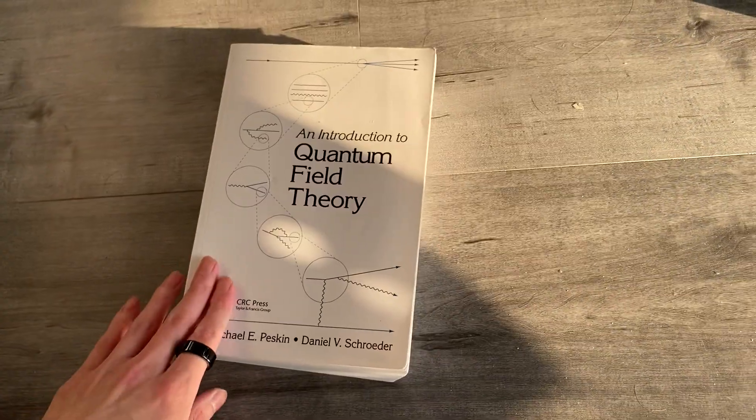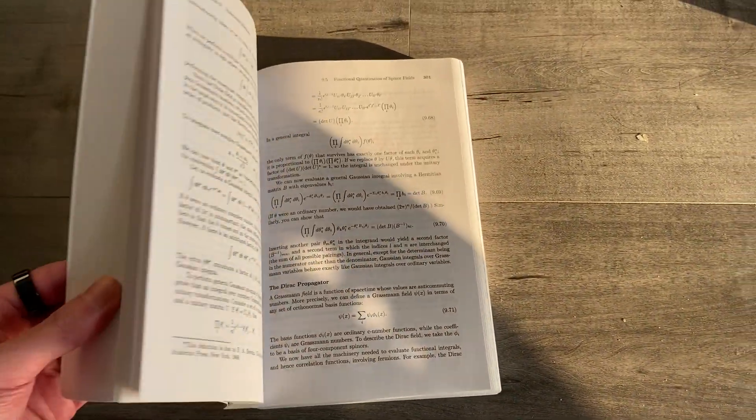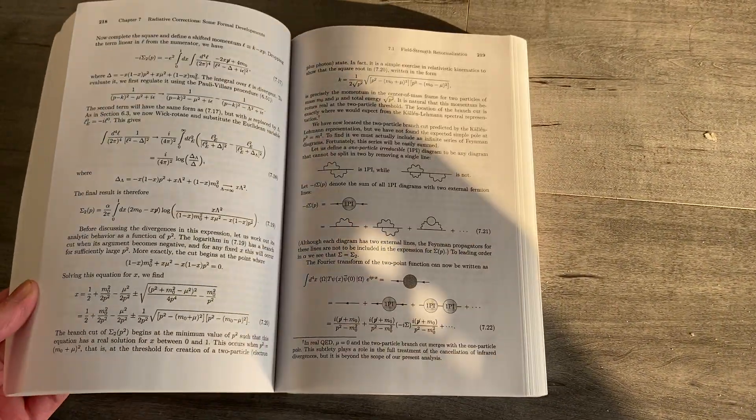For quantum field theory, I recommend Peskin and Schroeder. It's very mathematically dense. It's a go-to text for PhDs and researchers, and I'm hoping one day I can read it.